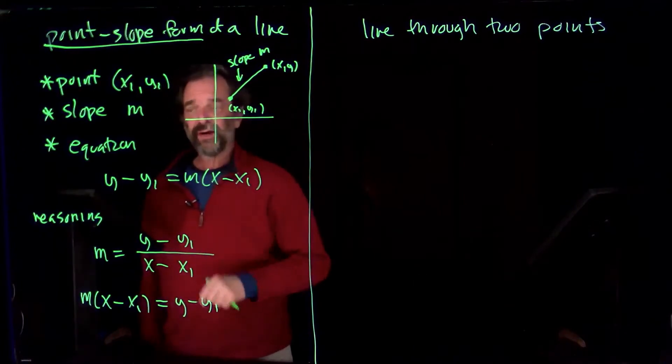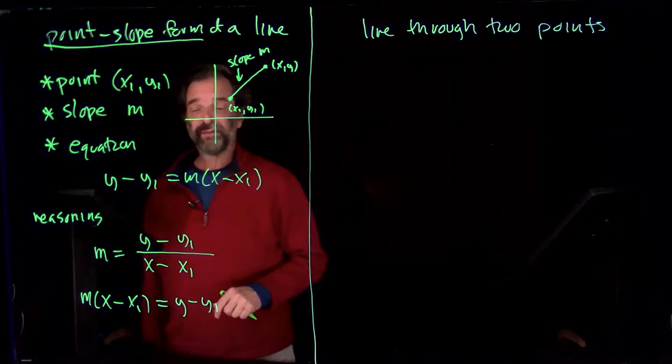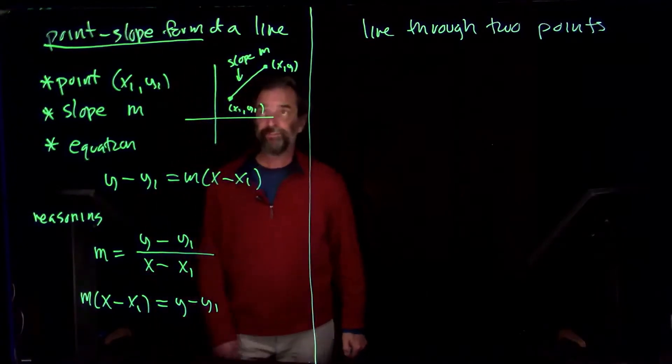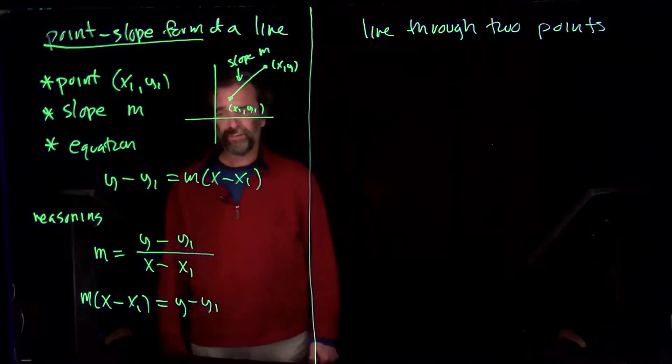So for this to work out, of course, we need the slope to be defined. So the line can't be vertical. A vertical line won't have a point-slope form of the equation.